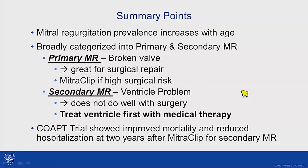A few summary points: mitral regurgitation prevalence increases with age and is broadly categorized as primary or secondary. Primary is the broken valve — great for surgical repair, with MitraClip available if surgery isn't suitable. Secondary MR is a problem of the ventricle and doesn't tend to do well with surgery. We treat the ventricle first, and then can consider MitraClip therapy based on COAPT trial data for patients continuing to have symptoms and severe mitral regurgitation despite best medical treatment.